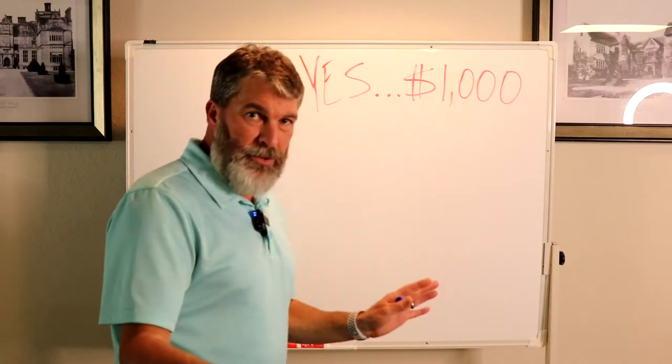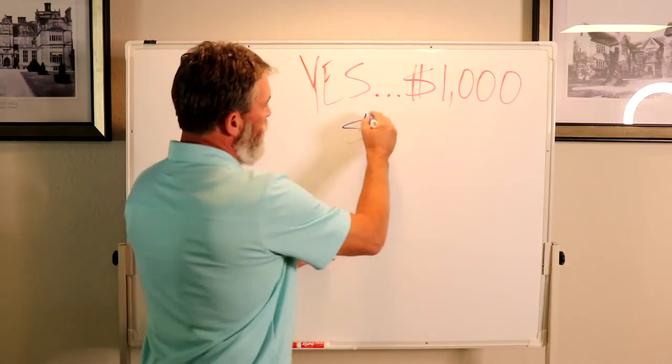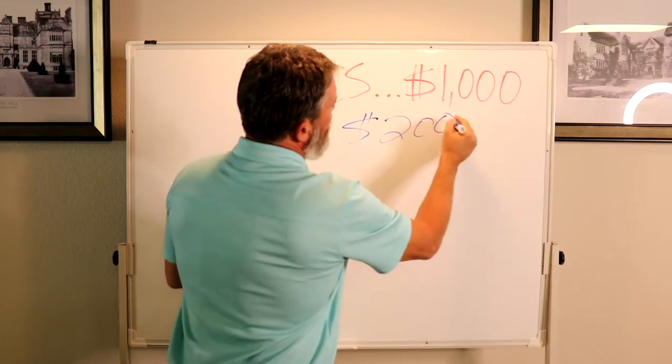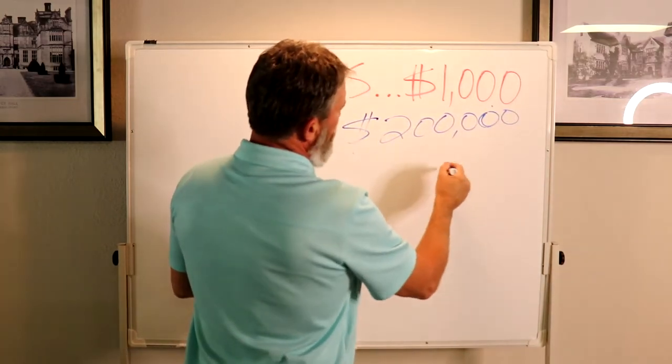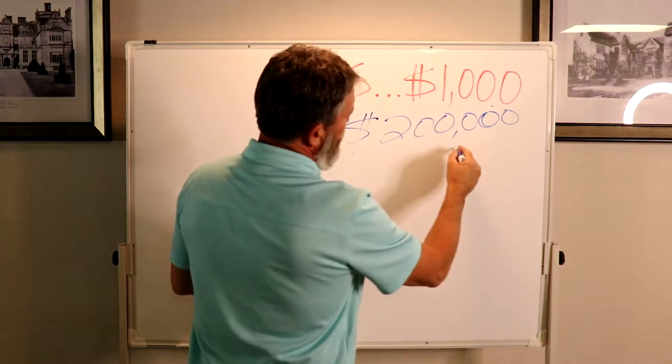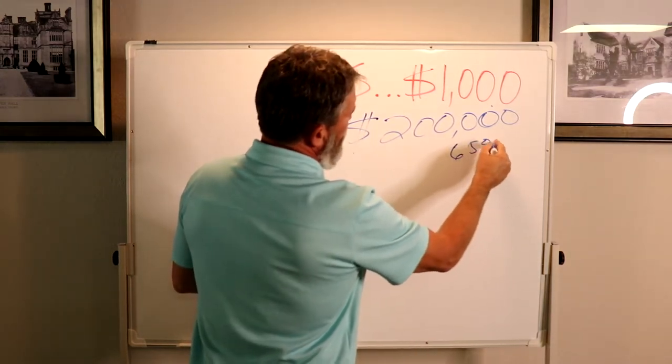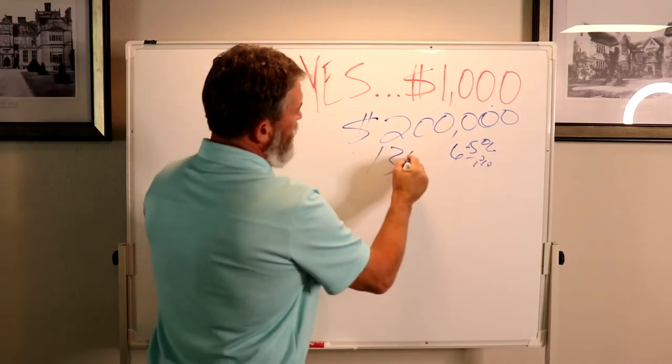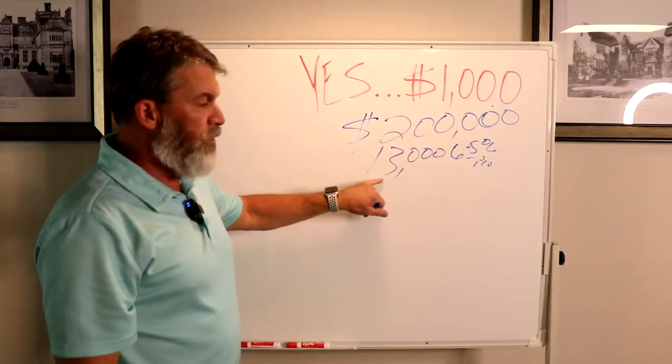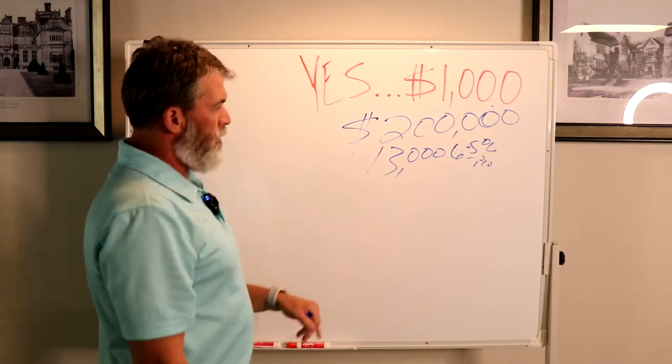Let's use for example a $200,000 home. It's going to run you about six and a half to seven percent total, which is about $13,000. Now that includes your down payment and your closing cost.